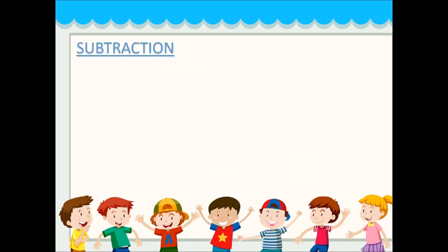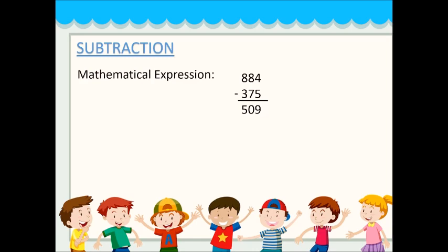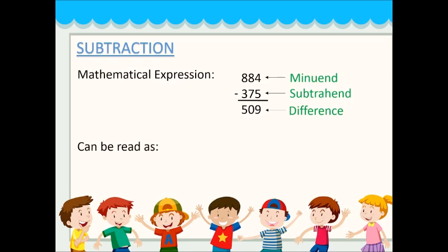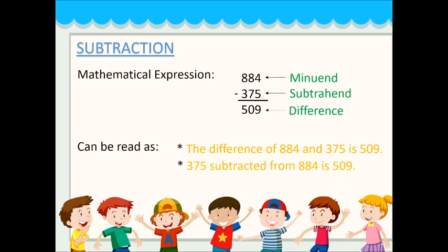Next, subtraction. The mathematical expression is written as 884 minus 375 is equal to 509. Where 884 is the minuend and 375 is the subtrahend, and the answer is called the difference. These can be read as: the difference of 884 and 375 is 509, or 375 subtracted from 884 is 509, or simply 884 minus 375 is equals to 509.